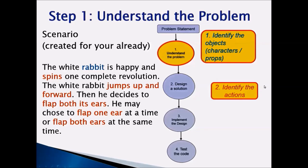The second thing we need to keep in mind is to identify the actions. Based on the scenario, we know that White Rabbit can jump up and forward, White Rabbit can spin, and White Rabbit can flap its ears.